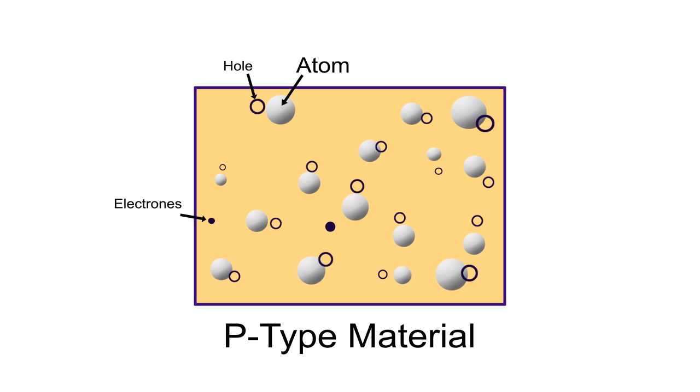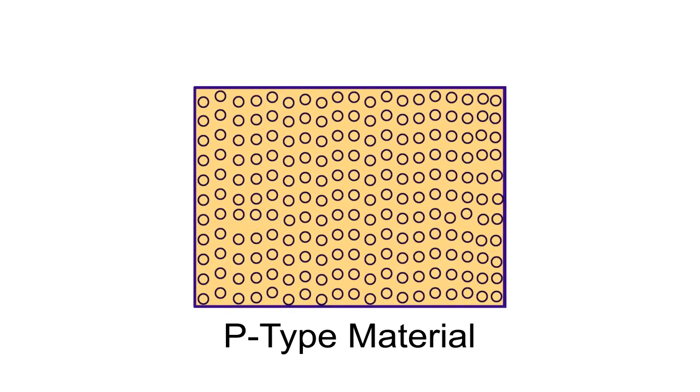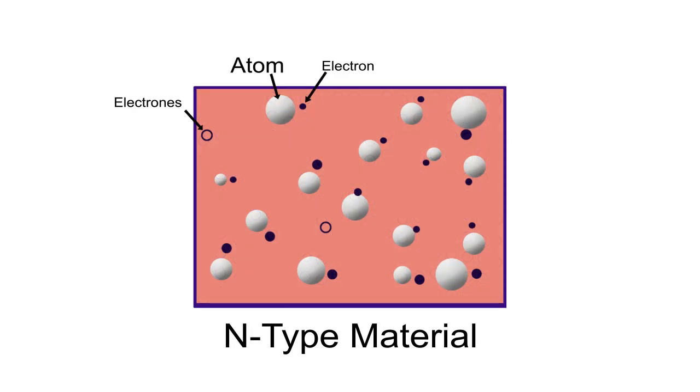P-type material consists of a large number of holes and few thermally generated electrons, thus holes are majority charge carriers. Similarly, N-type material consists of a large number of electrons and few thermally generated holes.